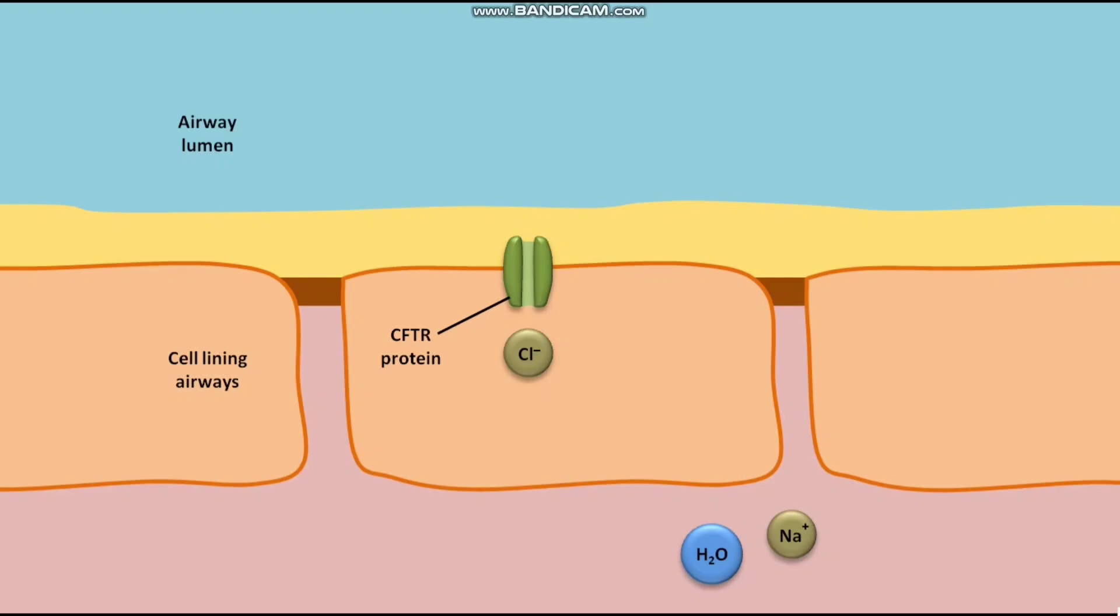Chloride ions present in the cell lining airways are secreted out of the cell by the normal CFTR protein present in the plasma membrane. This movement of chloride ions out of the cell and into the lumen provides the driving force for the concurrent movement of sodium ions into the lumen.